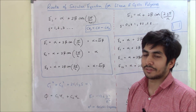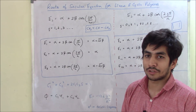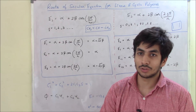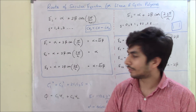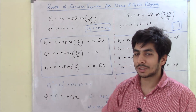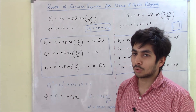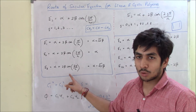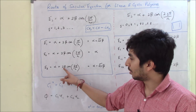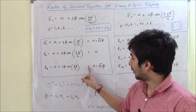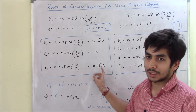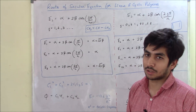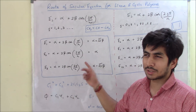Cos 135° = −1/√2, so 2 × (−1/√2) = −√2, giving E3 = alpha − √2·beta. So the three roots are: alpha + √2·beta, alpha, and alpha − √2·beta. This was asked as a four-mark question in December 2012.